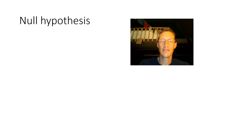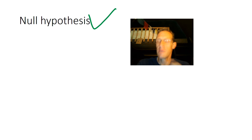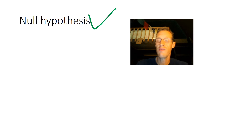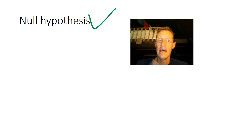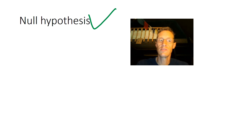Our chi-square was acceptable, and that means we can also accept the null hypothesis. At the beginning of the experiment, I said the coin should not affect the outcome. In other words, the coin itself shouldn't have any effect on whether the result is heads or tails. So in this case, our null hypothesis was that the object itself was not a variable — and that turned out to be true, because our results were close enough to what we would expect.